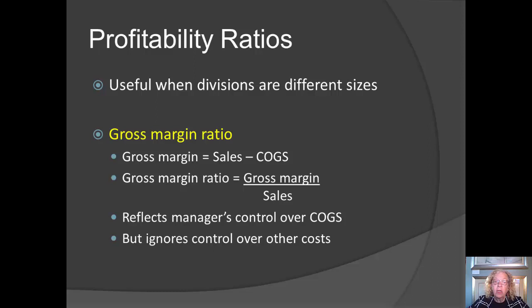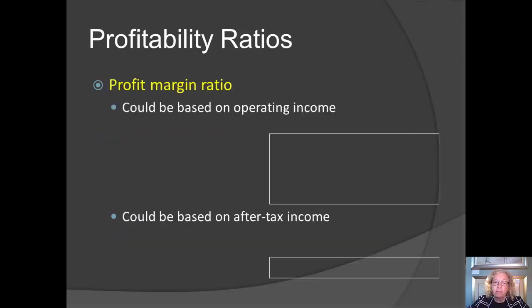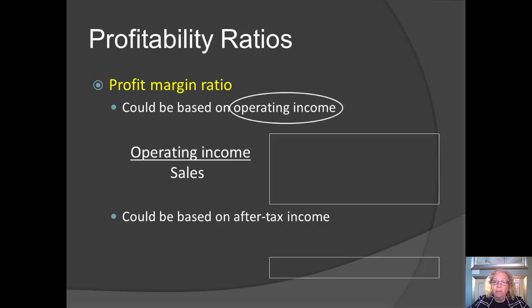However, the gross margin ratio ignores other operating costs for the division. Another ratio that might be useful is the profit margin ratio. In order to use this ratio effectively, we need to decide how we're going to measure profit. Some firms choose operating income.